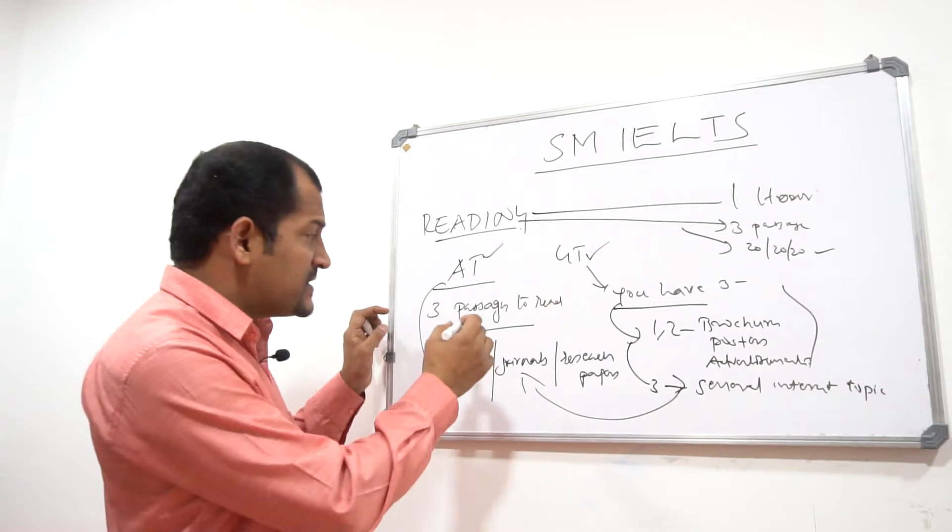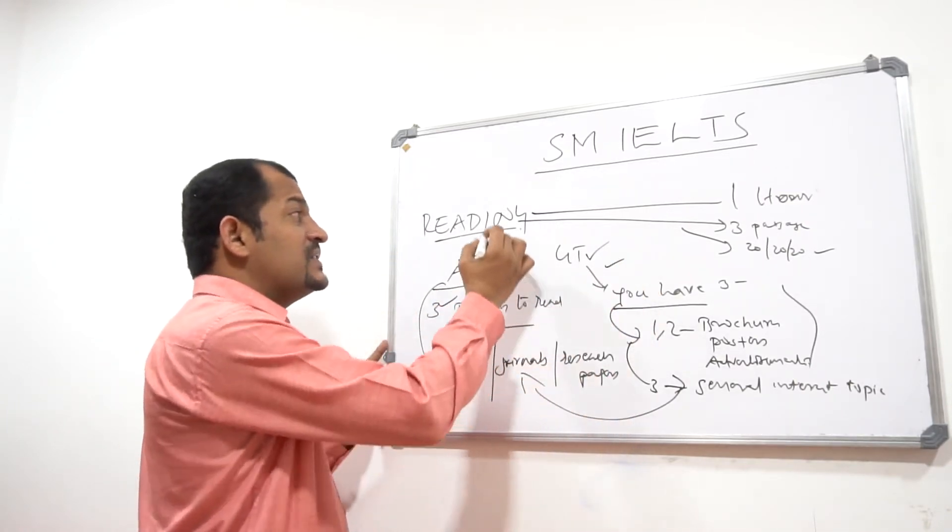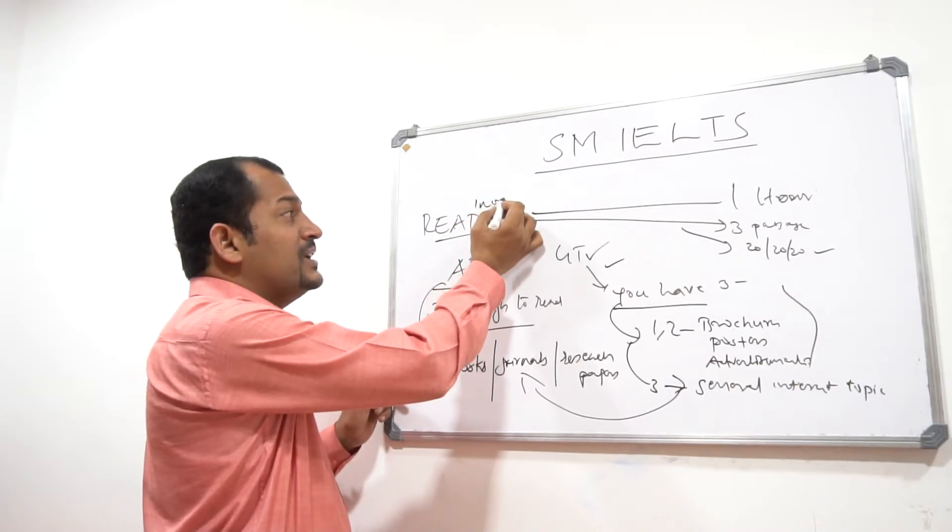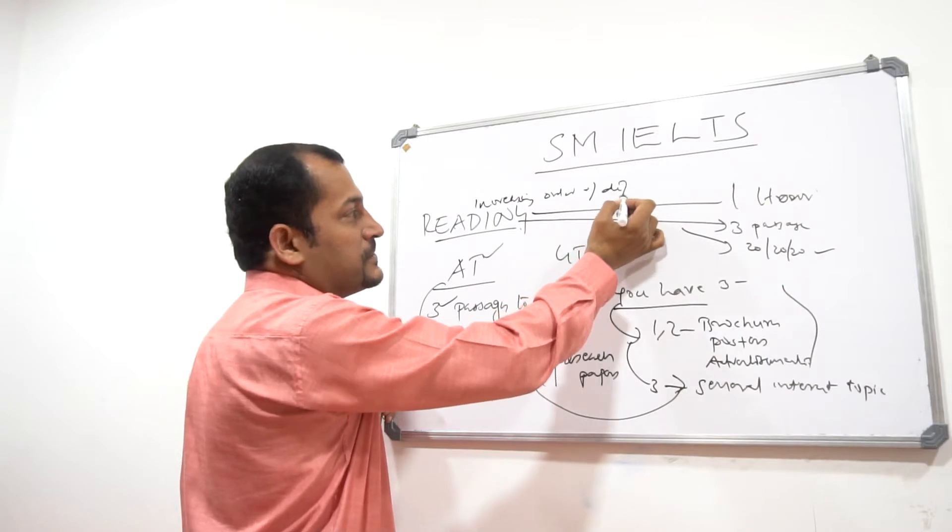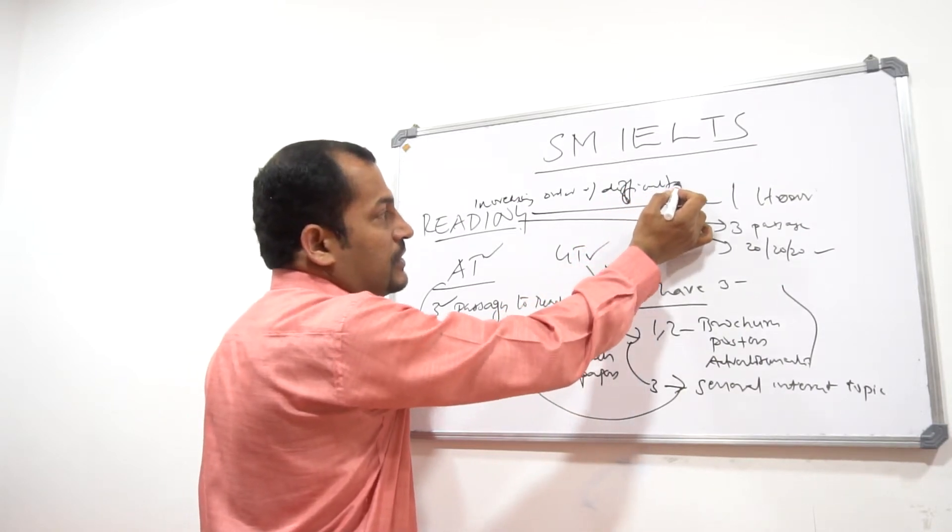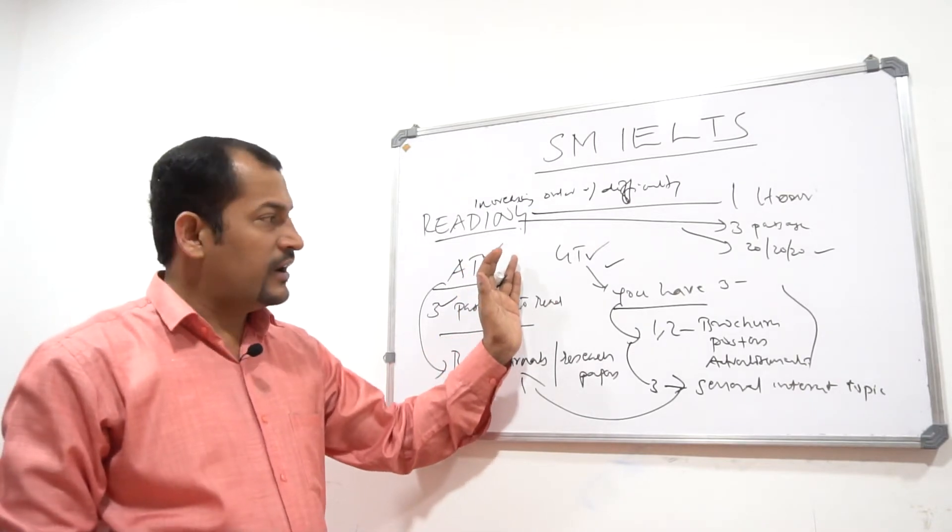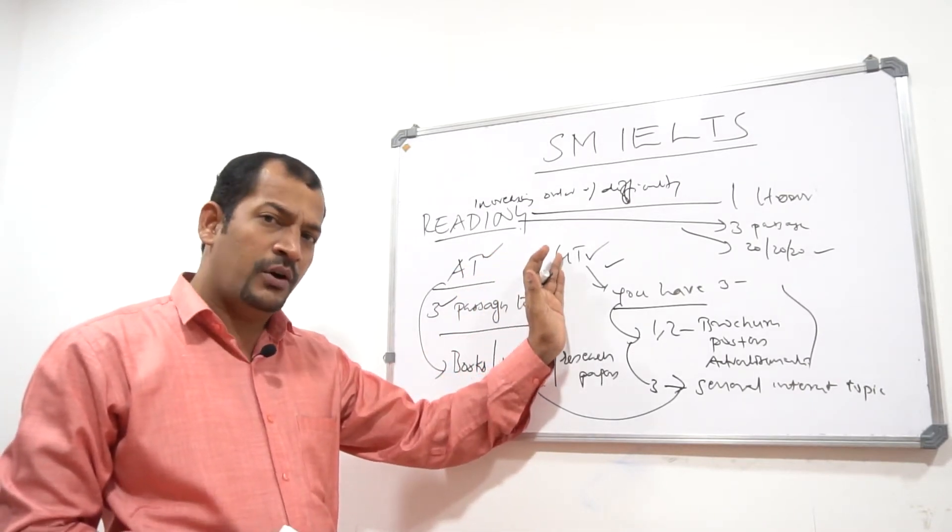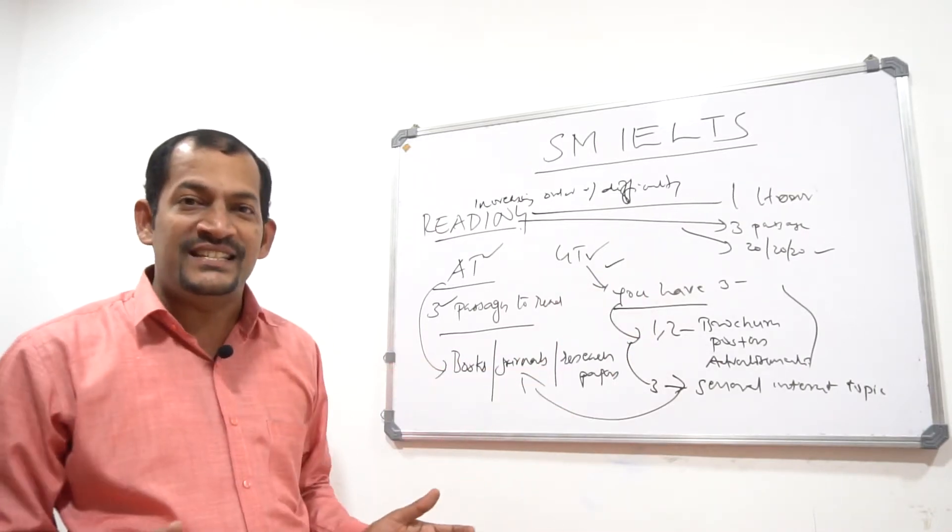These passages, both for IELTS Academic and GT, are arranged in increasing order of difficulty. By now I think you understand—the first passage is tough, the second one is tougher, and the third one is even tougher. There is nothing like an easy passage in IELTS.